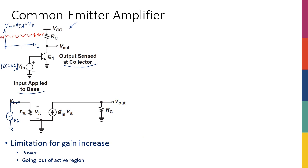This notation is standard and used by electronics engineers worldwide: capital letters with capital subscript means DC; small letters with small subscript means AC or small signal; and small letters with capital subscript means the total (DC + AC). For example, if I write Vc in all caps, I mean the DC part of the collector voltage; in all small letters, I mean the small signal part. Capital V with small subscript doesn't really mean anything — nobody uses that.